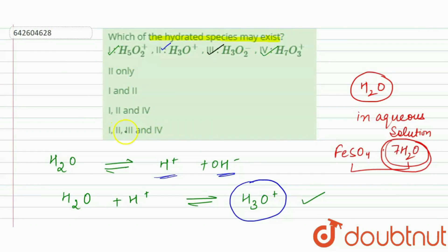So according to the options, our correct answer is first, second, third and fourth. All the given species can exist as hydrated species. Thank you.